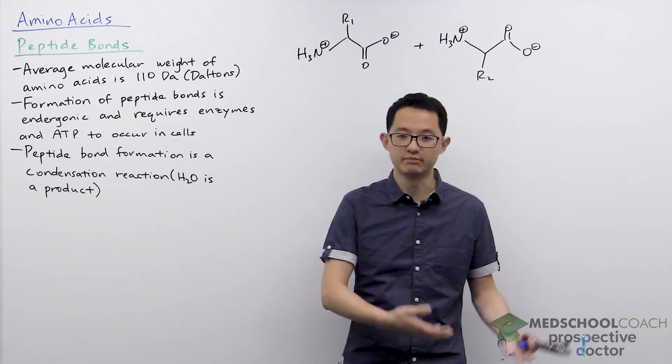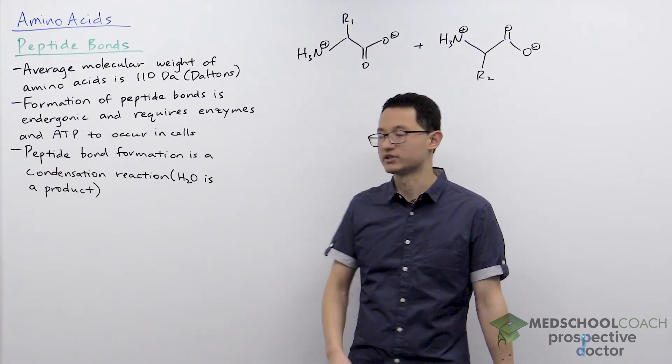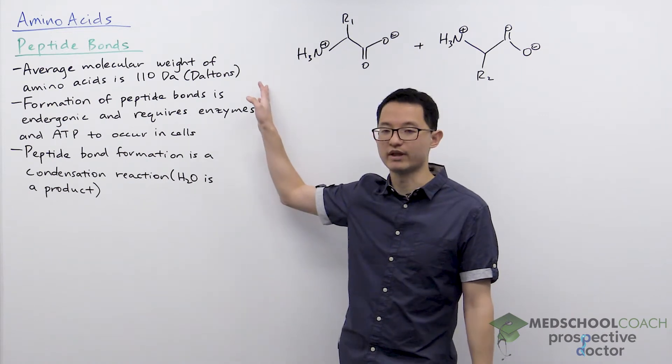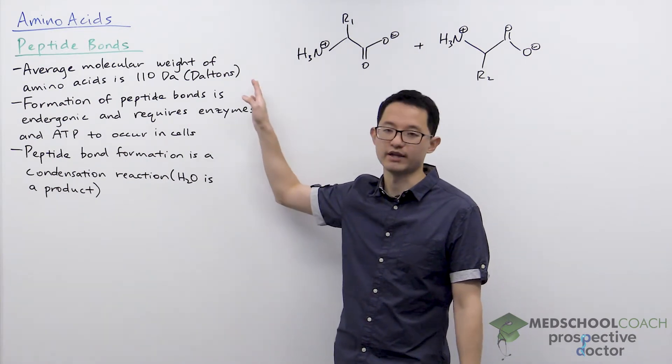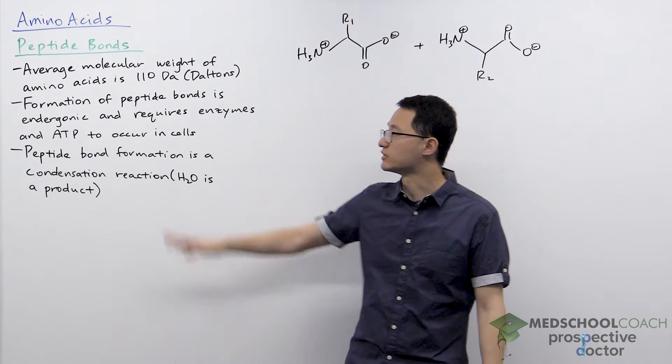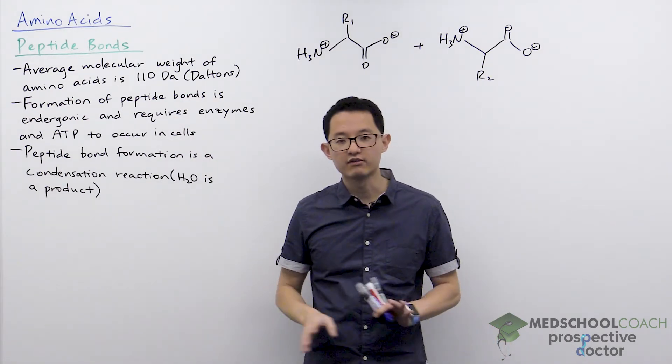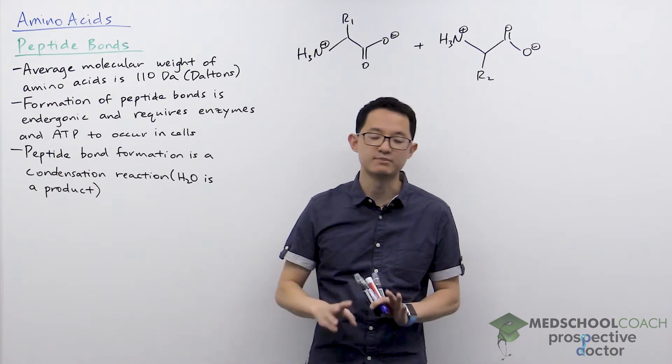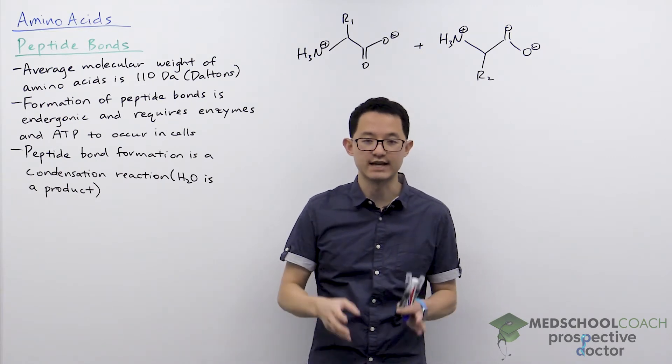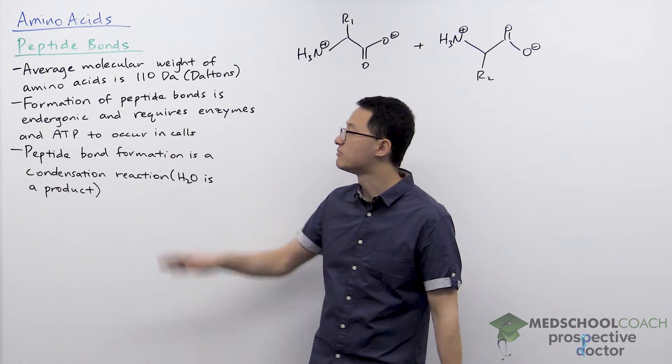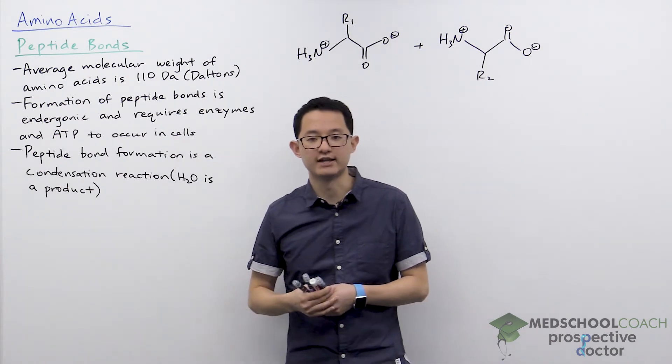The way to answer this question is you need to have memorized for the MCAT the average molecular weight of amino acids, which is 110 Daltons. We've seen all the amino acids - their side chains are all different shapes and sizes, and each amino acid has a different molecular weight, but the average weight is 110 Daltons.